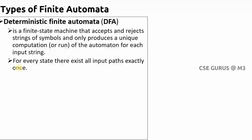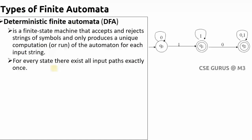In DFA, for every state there exists all input paths exactly once. For example, if you have three states q0, q1, q2 and inputs sigma = {0, 1}, then the rule is for every state there should be exactly one input path. That means q0 on 0, q0 on 1, q1 on 0, q1 on 1, q2 on 0, q2 on 1 must each lead to exactly one output state.